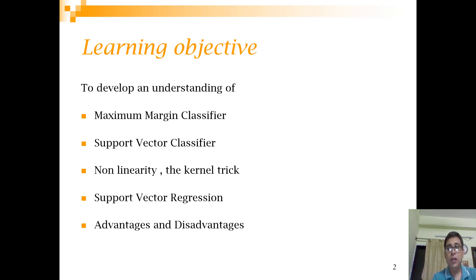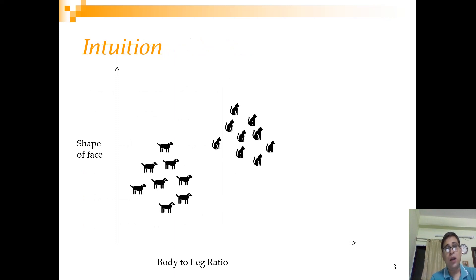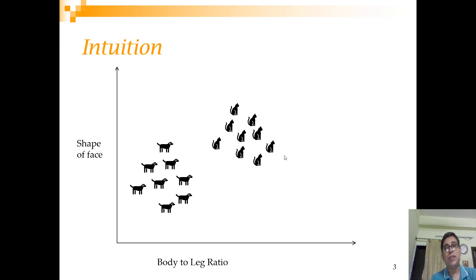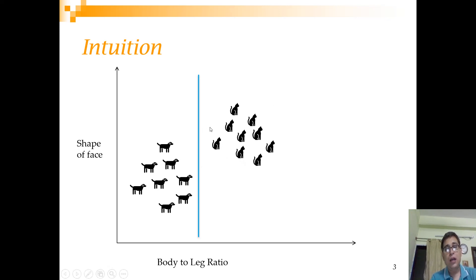Classification is a task where there are multiple categories and multiple independent variables. Let's say you have two classes — cat and dog — and essentially what you want to do is draw a line which will serve as a decision boundary to separate them. Once you have this decision boundary, if something is on the right side you call it a cat, and if something is on the left side you call it a dog.